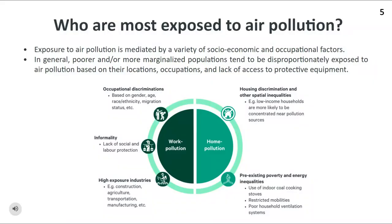In general, populations that are socioeconomically disadvantaged tend to bear the brunt of air pollution. Poorer populations are unequally exposed to air pollution based on where they're living, their occupation, and access to protective equipment. Those who are disproportionately exposed to chronic air pollution are often low-income households and outdoor workers, such as within the construction, transportation, and agriculture sectors, or in certain informal occupations who cannot insulate themselves from exposure.